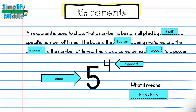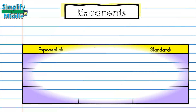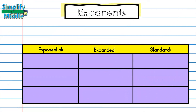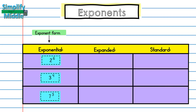Let's look at some more examples. We have a table here with 3 different forms: exponential, expanded, and standard. Exponential form is really just talking about any number with an exponent in it. Our expanded form is talking about the factor being repeated with multiplication — the base being multiplied a specific number of times depending on the exponent. Our final form is standard form, which is the product. Once I've multiplied out the expanded form to get an answer, that's my standard form.